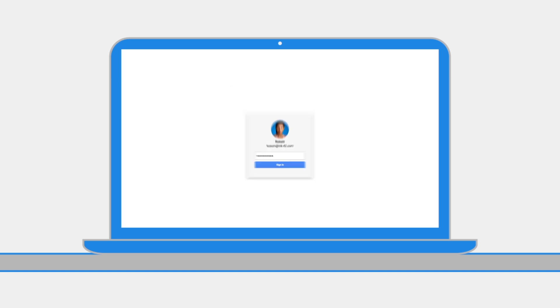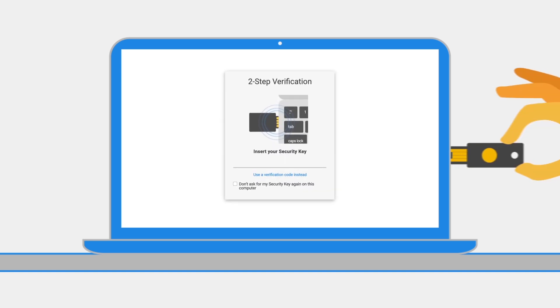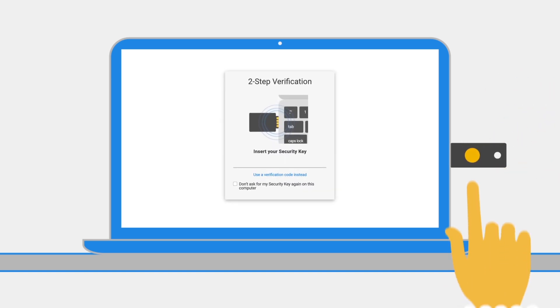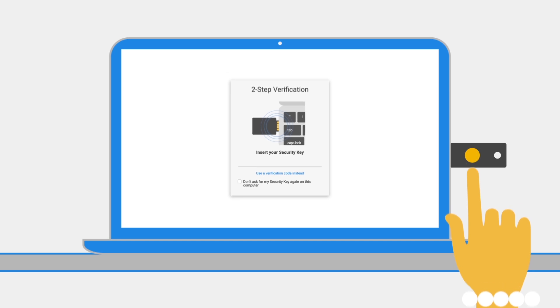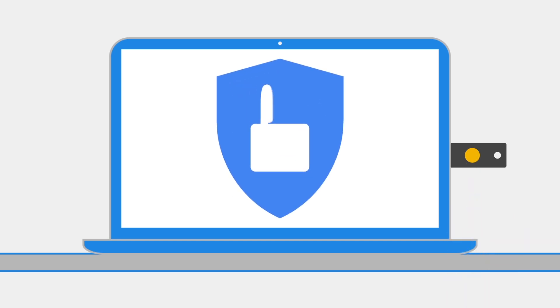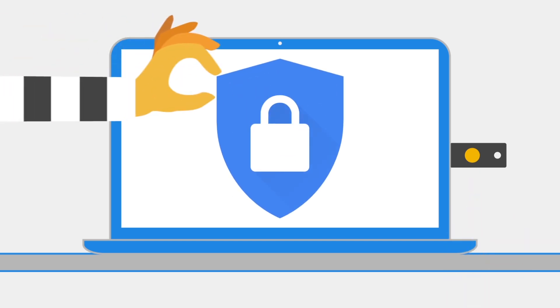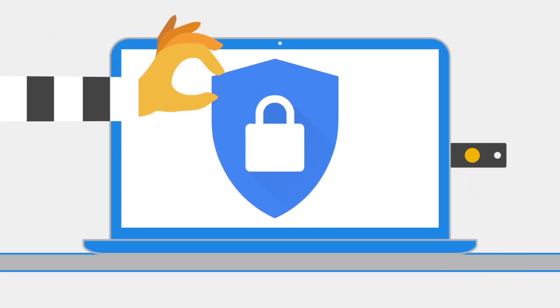The security key is a small key you insert into your computer and tap on. This sends an encrypted code to Google servers without having to type anything on your screen. It's simple, quick, and more secure.